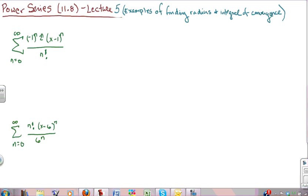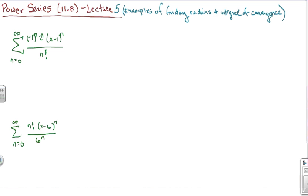We're going to do some examples of finding the radius and interval of convergence. Most of the time the ratio test is going to be useful. You might want to check to see if you're dealing with a geometric series, because if so, that's a little bit quicker — the geometric series test. And sometimes if everything's raised to the nth power, the root test might be useful. I've got two examples here.